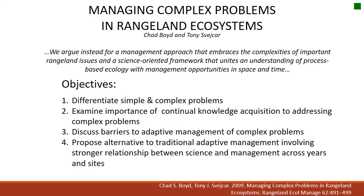The bulk of the information presented in this lecture was taken from a paper titled 'Managing Complex Problems in Rangeland Ecosystems,' written by Chad and Tony. Within this paper are listed four objectives: differentiating simple and complex problems; examining the importance of evolutionary knowledge acquisition in addressing complex problems; discussing barriers to adaptive management of complex problems; and proposing an alternative to traditional adaptive management that involves strengthening the relationship between science and management over years and across sites.